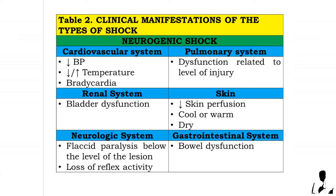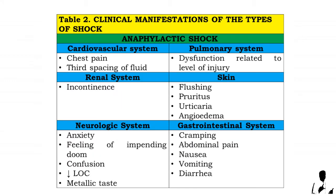Skin: cool or warm and dry. Neurologic system: flaccid paralysis below the level of the lesion and loss of reflex activity. Gastrointestinal system: bowel dysfunction. Signs and symptoms under anaphylactic shock — cardiovascular system: